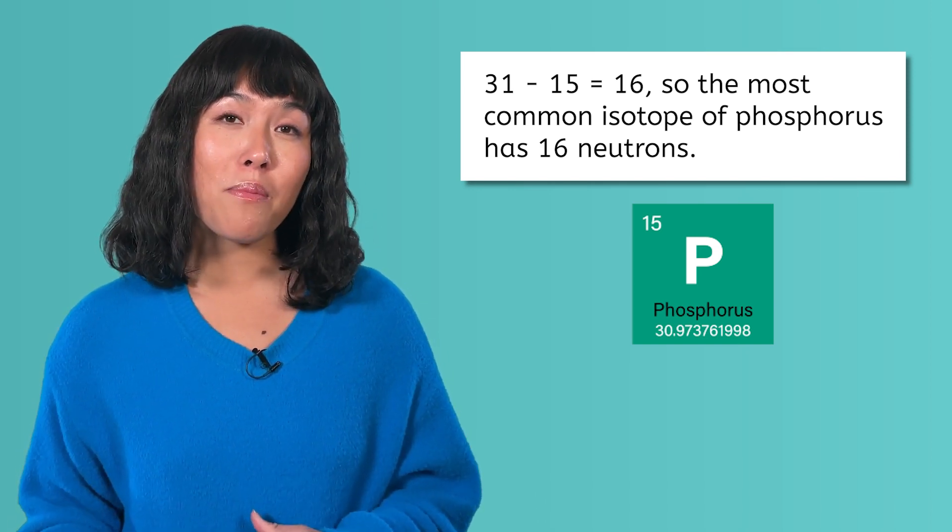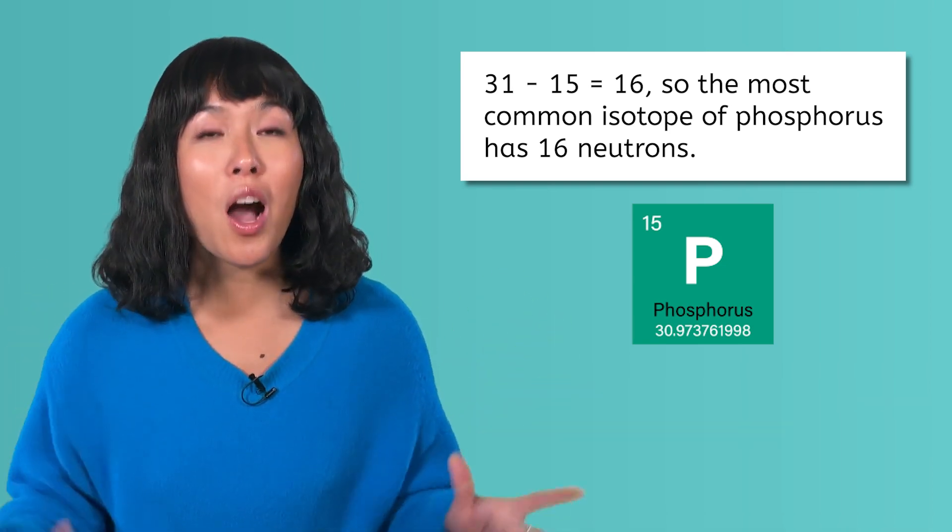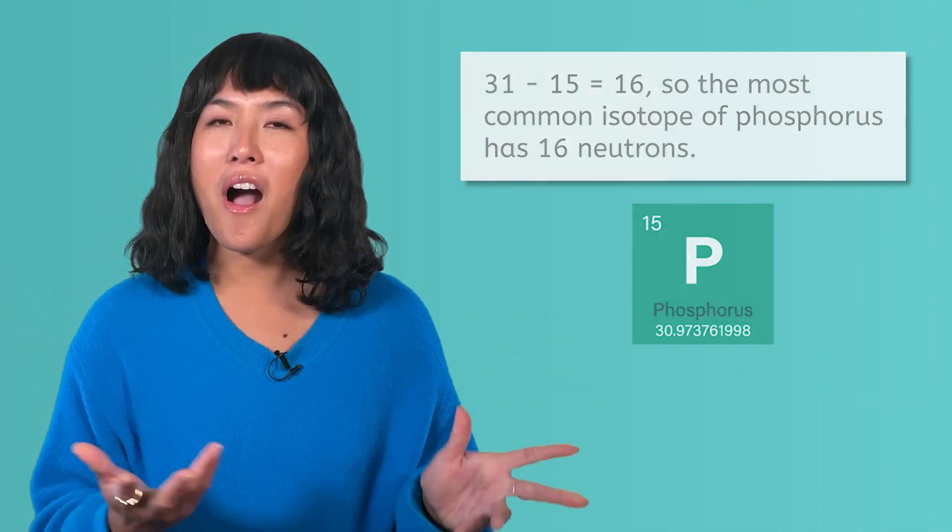But it is important to remember that this is just the number of neutrons in the most commonly found isotope of phosphorus. There are other isotopes of phosphorus in nature that have fewer than 16 neutrons, which explains why the atomic mass is slightly less than 31.